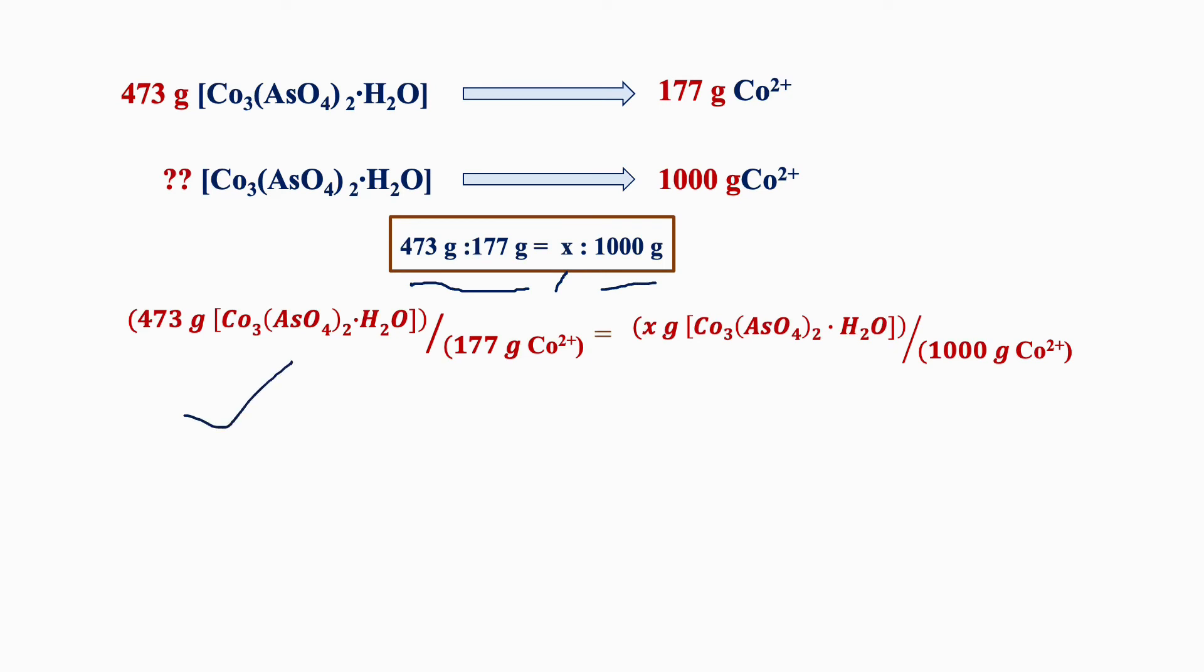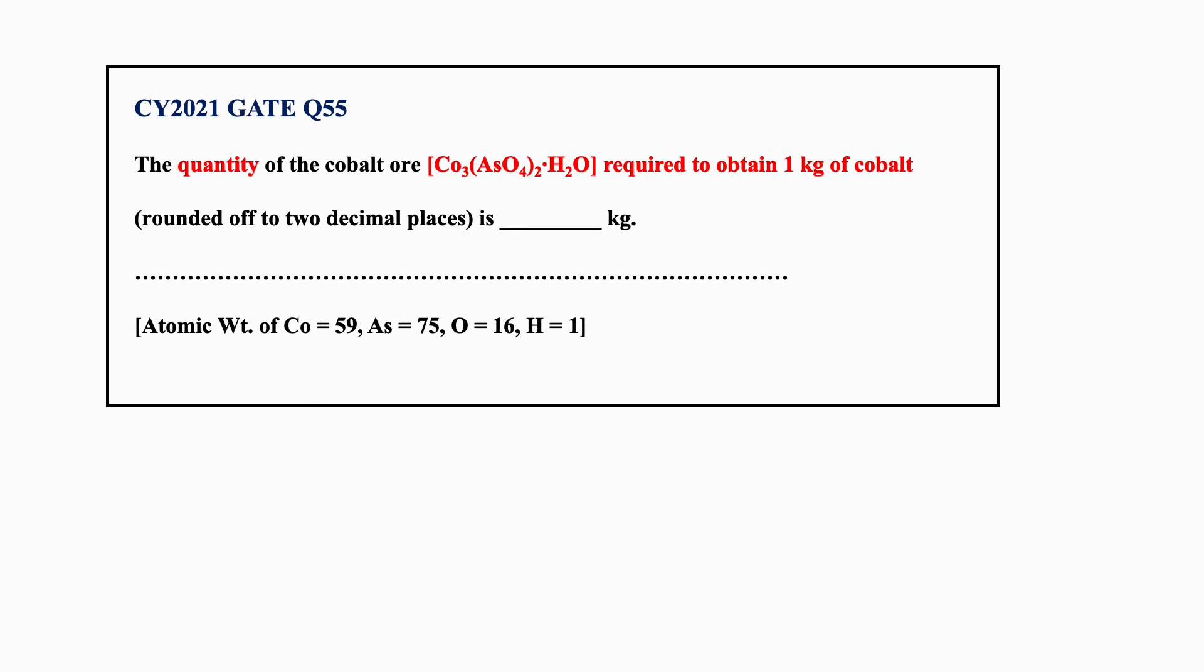We can solve: x equals 473 times 1000 divided by 177, which gives you x equals 2.67 kilograms, and that will be the answer for the question.